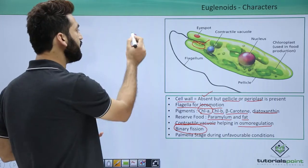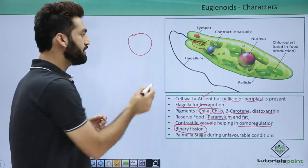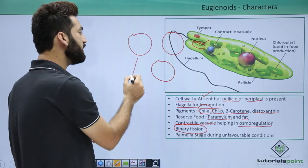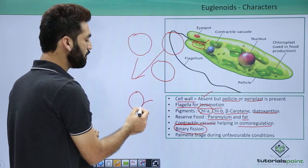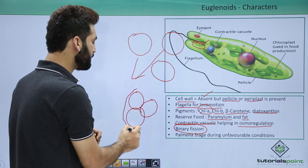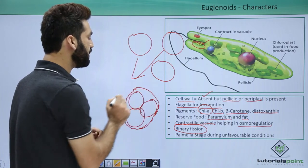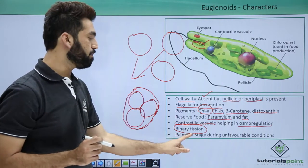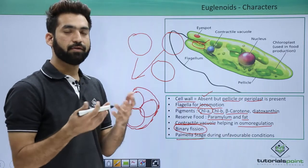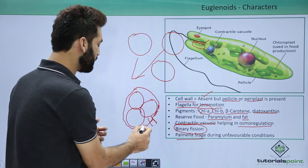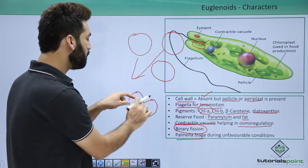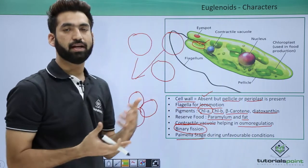Because euglenoids lack a cell wall, during unfavorable conditions multiple euglenoids come close together and secrete a mucilaginous layer that protects them. This stage is called the palmella stage, formed during unfavorable conditions. When favorable conditions return, the palmella stage dissolves and the individual euglenoids separate and behave normally again.